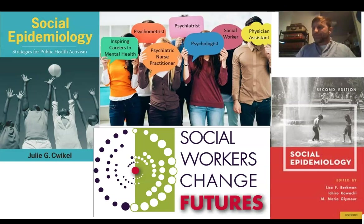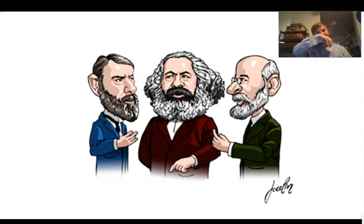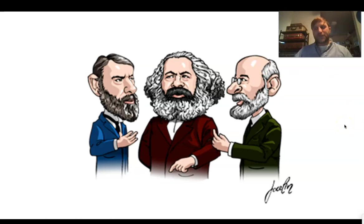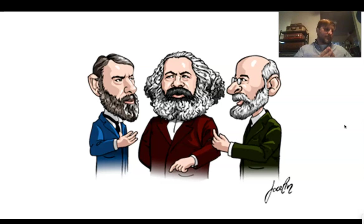Going back to sociology — sociology as a discipline kind of began with the 'big three': Marx, Max Weber, and Emile Durkheim, who you all should know about. They were interested in studying large-scale systems — macro sociology. Things like capitalism, the transition from rural to urban societies, from non-industrial to industrial societies, government, religion — these huge systems that cross cultures and civilizations.